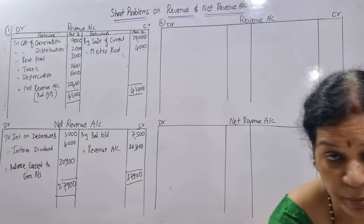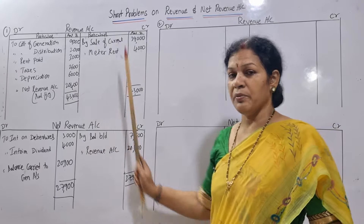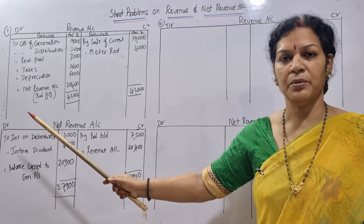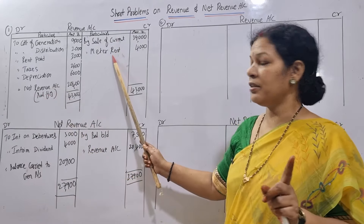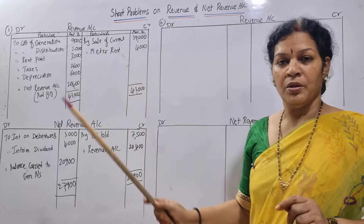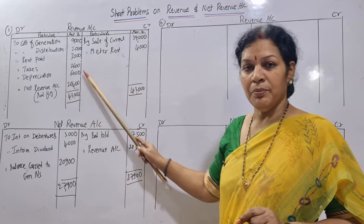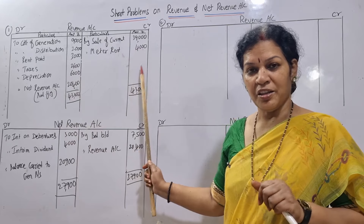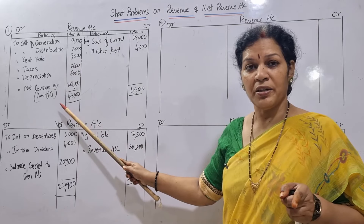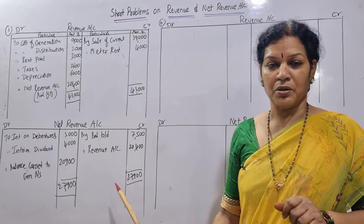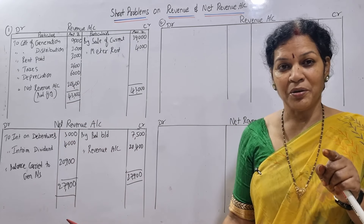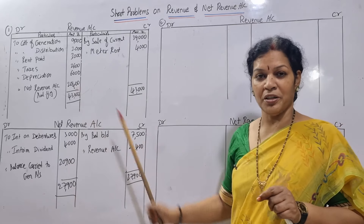Let me explain once again. Revenue account: all debit side items are expenses except dividend and interest; credit side is income - we found only two incomes. You got some amount - credit side is more, debit side is less - so you got some amount which is transferred to the net revenue account. Like net profit is transferred to profit and loss appropriation account, here it is transferred to net revenue account.